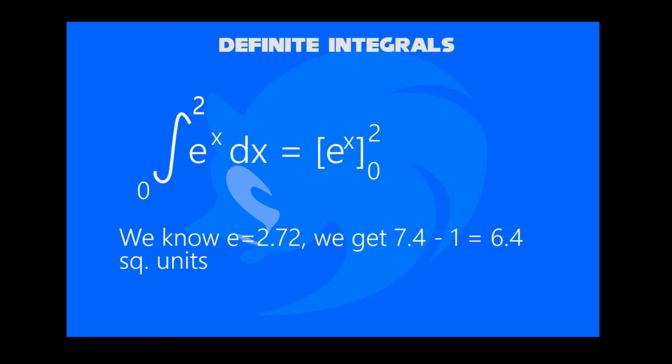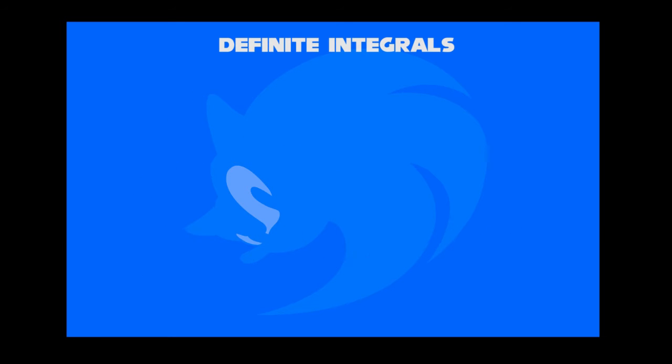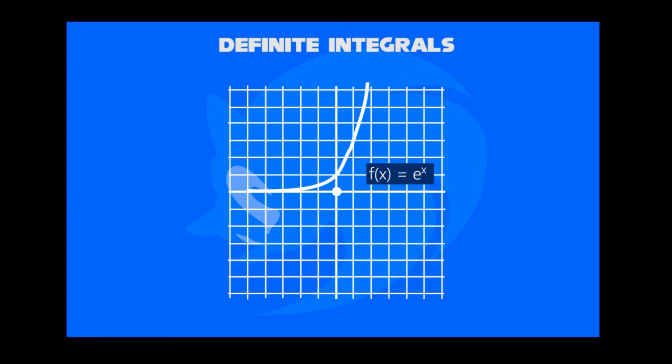On solving them we get 7.4 minus 1, equals 6.4 square units. This can now be shaded in this graph.